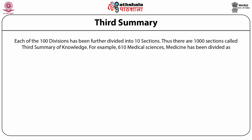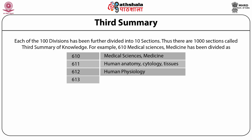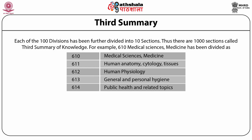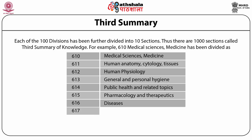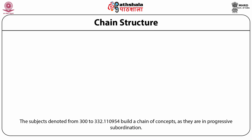For example, 610 medical sciences can be divided into 10 sections: 610 medical science in general, 611 human anatomy, cytology and tissues, 612 human physiology, 613 general and personal hygiene, 614 public health and related topics, 615 pharmacology and therapeutics, 616 diseases, 617 surgery and related topics, 618 other branches of medicine such as gerontology, and 619 experimental medicine. One of the contributions of the DDC is the hierarchy of subjects — that is, showing subordinate and coordinate relations.